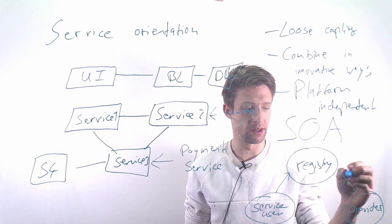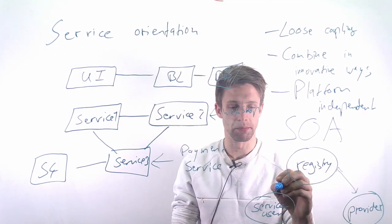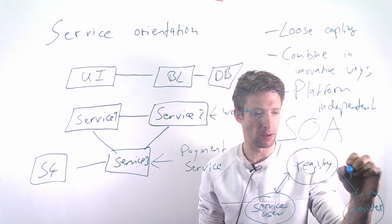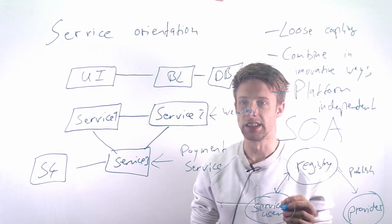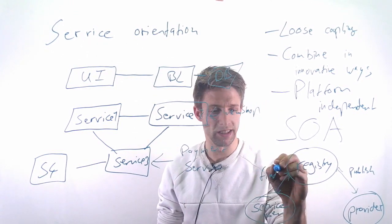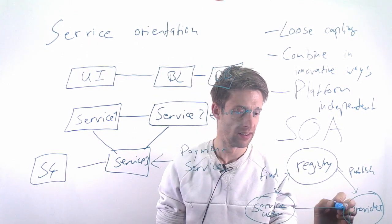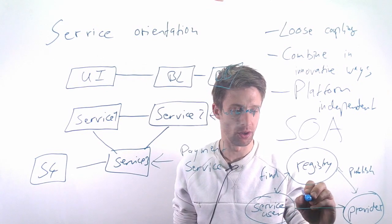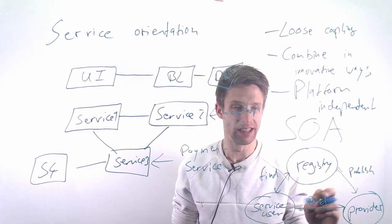The registry knows about all the providers and basically deals with the communication. The providers publish their services and the users find these services, and then the users can bind them—it's called in the SOA style—basically use them.